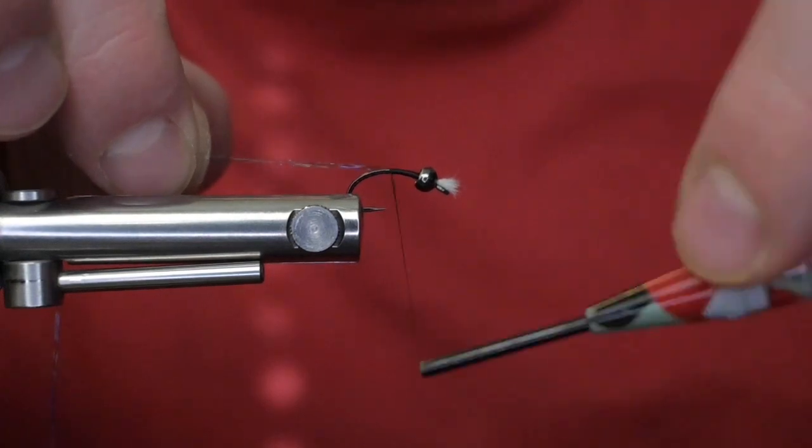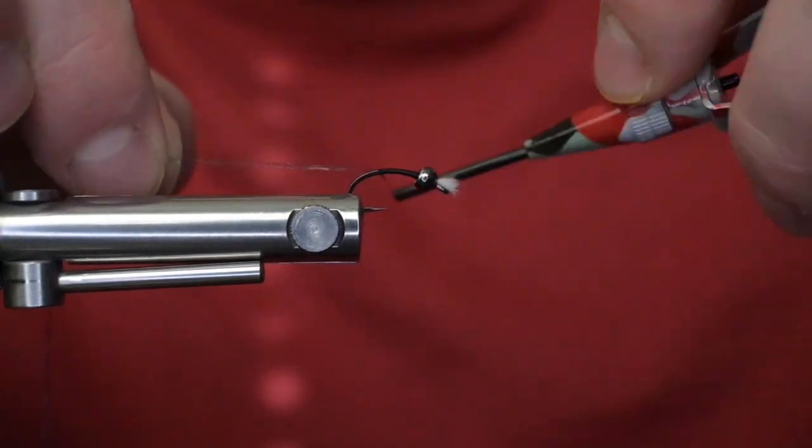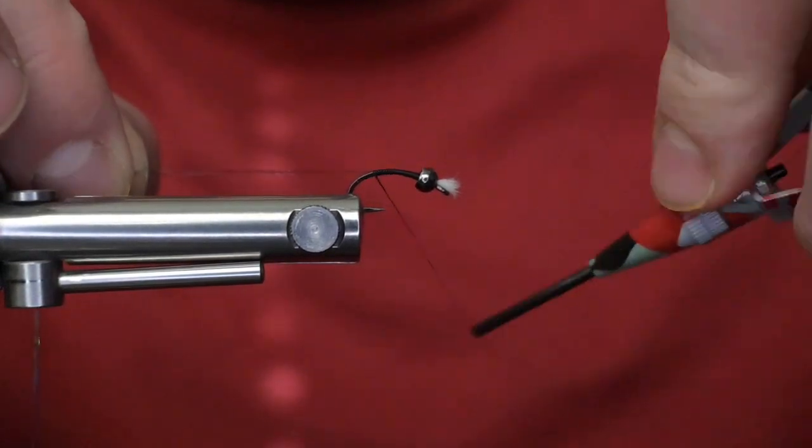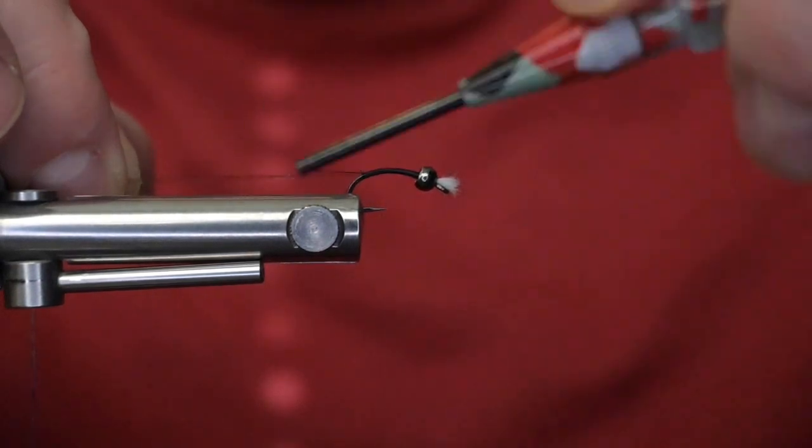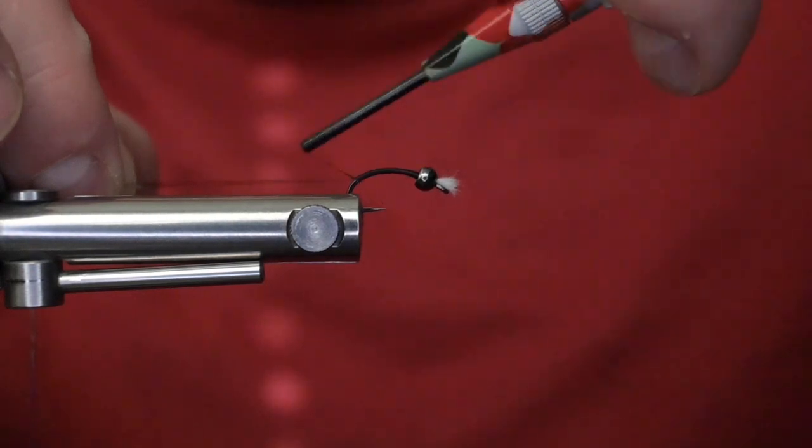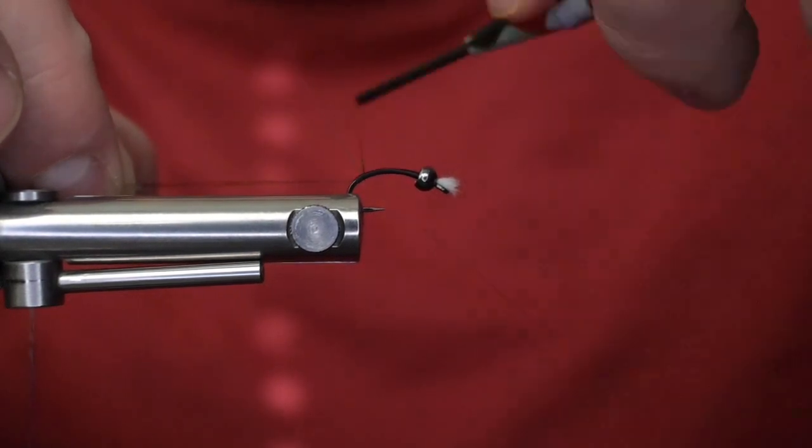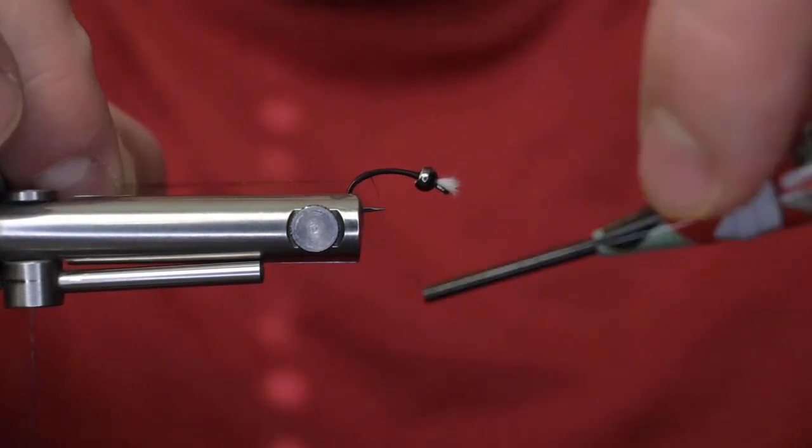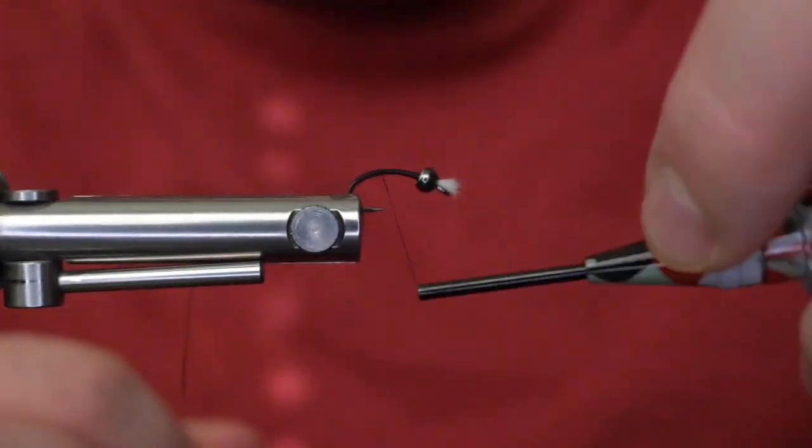I'm going to do my best to not have any gaps, because it is a tinsel. Tinsel and thread bodies, if you don't do really good even wraps, you will end up with gaps and bumps in your thread and in your body. And I just nicked it - well, that's going to happen.